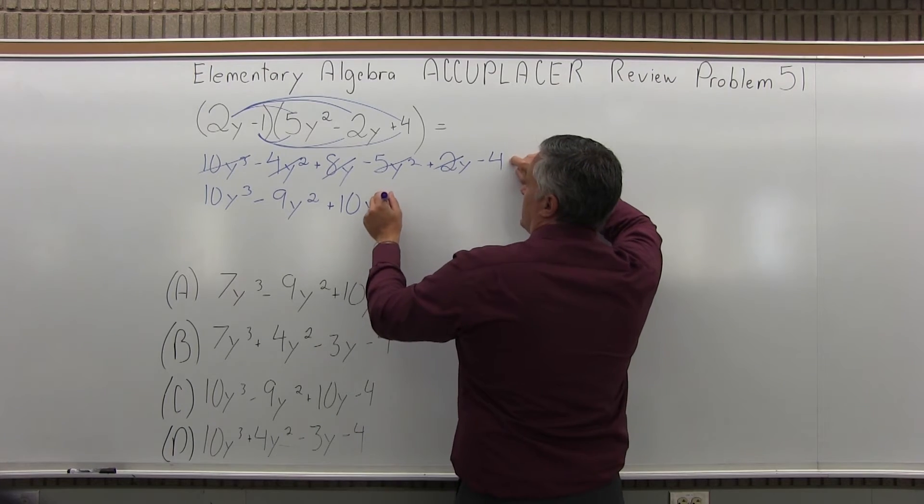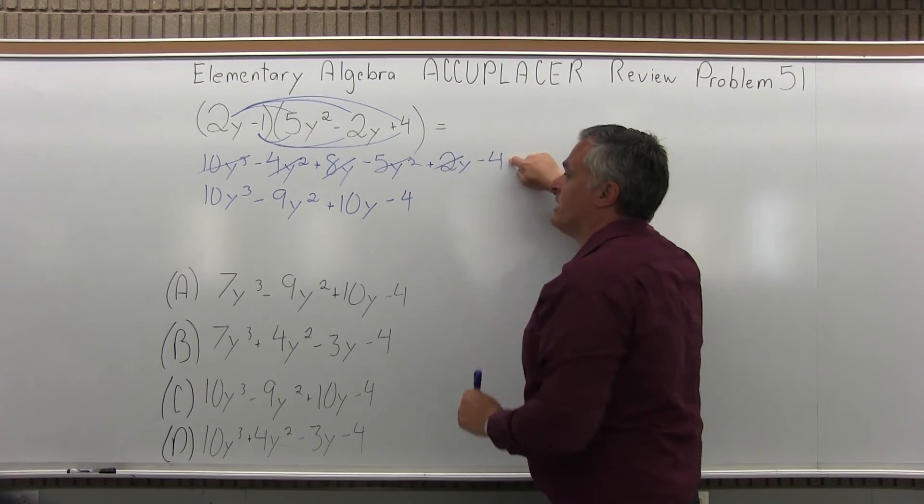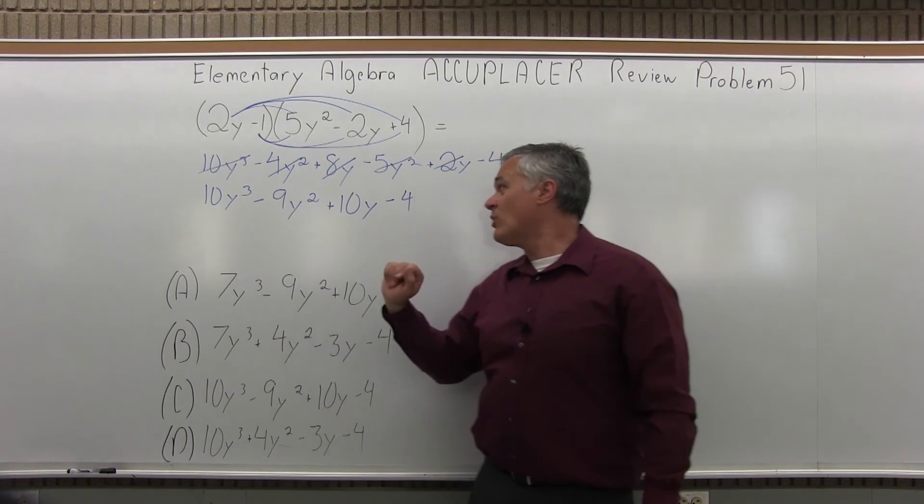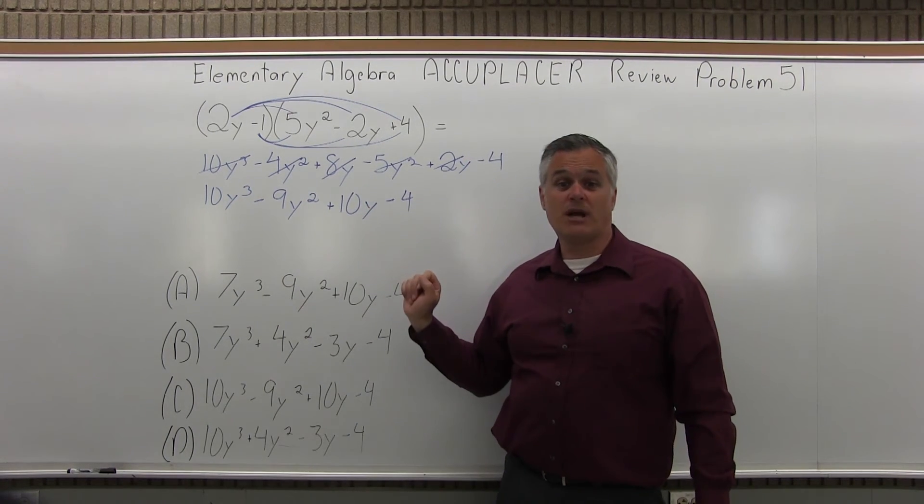And the only thing left is the minus 4. There's nothing left to combine it with. So I have an answer of 10y to the third minus 9y squared plus 10y minus 4.